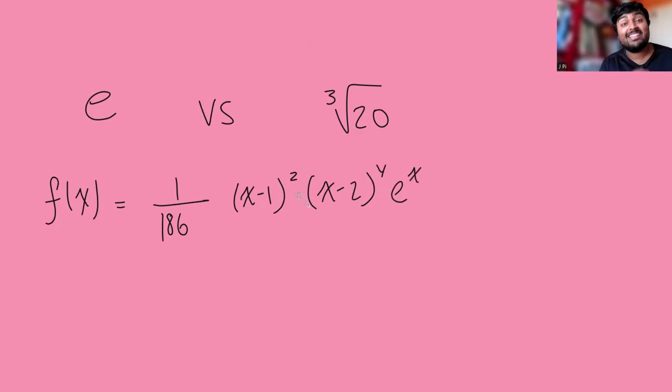Now, it's pretty clear here that f(x) is a non-negative function. Every term here is positive. (x-1) squared is always positive, (x-2) to the 4 is always positive, e to the x is always positive, and so is this 1 over 186.